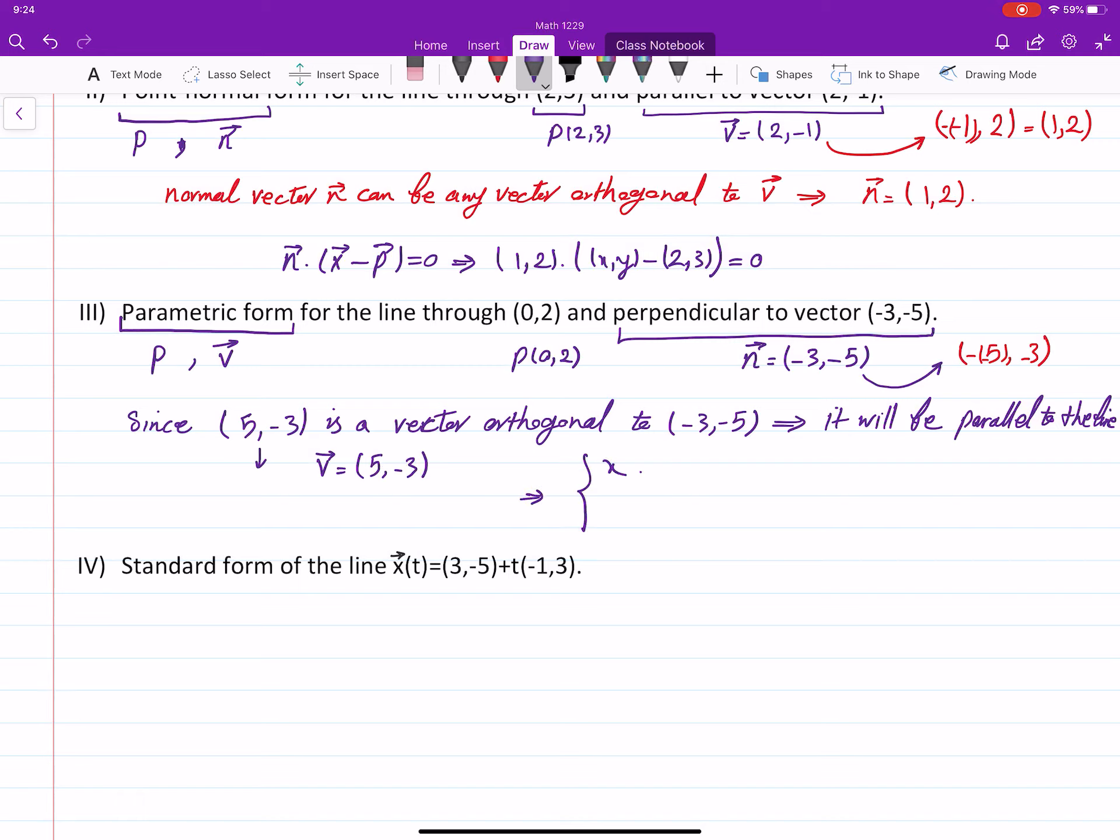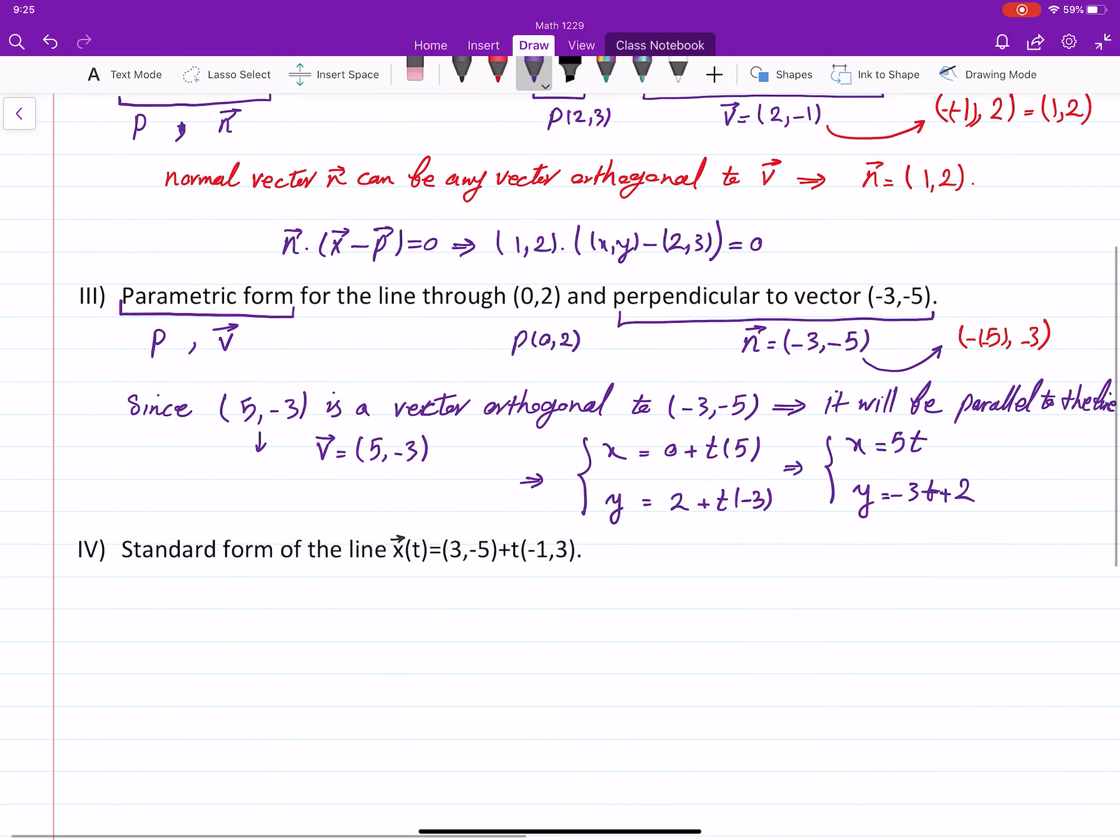V is 5 and negative 3. Then, parametric equations are x, y. Point is P1 plus TV1, P2 plus TV2. So if I simplify, I get x equal to 5t and y equals to negative 3t plus 2. So that is the parametric equation for the line in part 3.